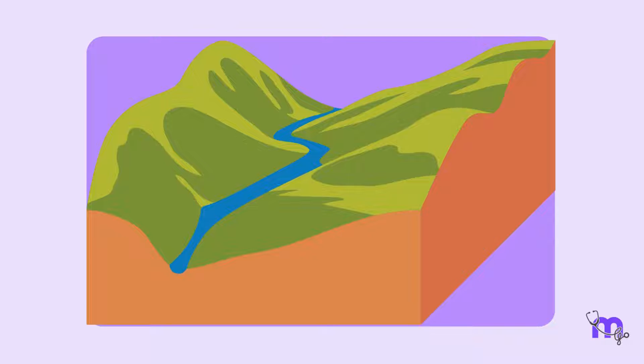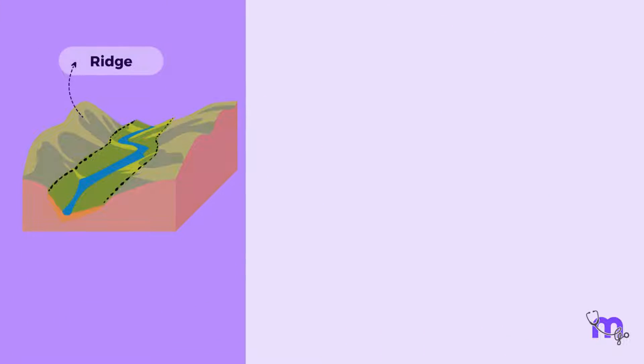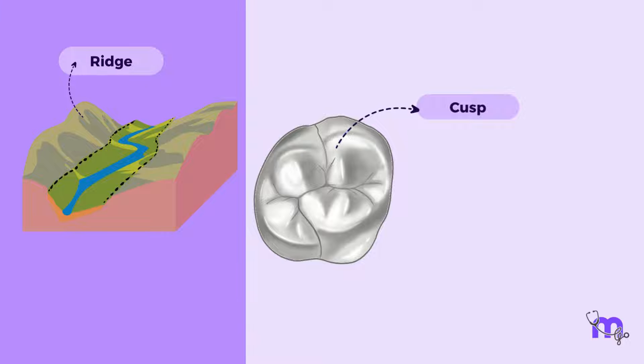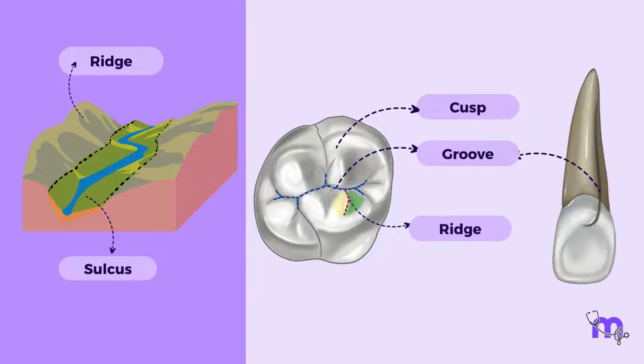Now, visualize the meeting point of mountain ranges, their slopes intersecting to create a long valley. This is called the sulcus, which is formed when the cusps and the ridges meet at the center, with an inclination. Just as valleys have streams that follow their contours, the sulcus has a developmental groove at the junction of its inclines. A groove is a shallow linear depression seen between the primary parts of the crown or root.